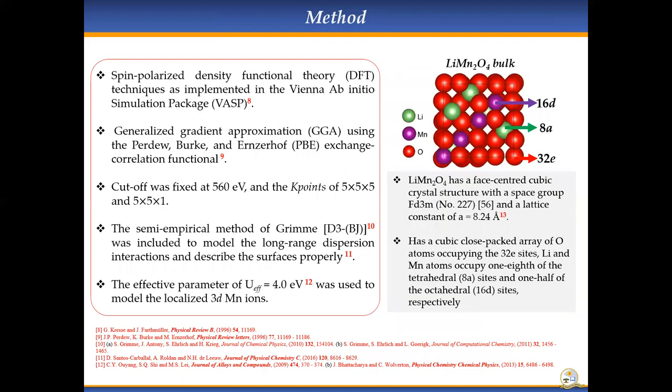The spinel lithium manganese oxide is a face-centered cubic structure with space group Fd3m with a lattice constant of 8.24 angstroms, which is in line with reported literature. It has a cubic close-packed array of oxygen occupying the 32e sites, lithium and manganese occupying the tetrahedral 8a sites and the octahedral 16d sites.